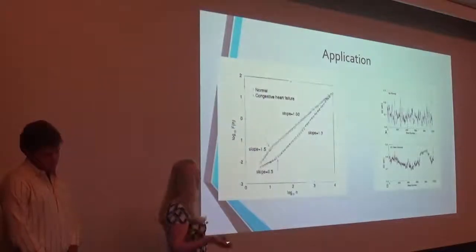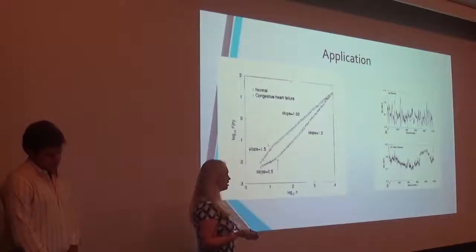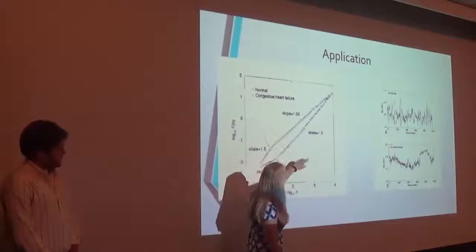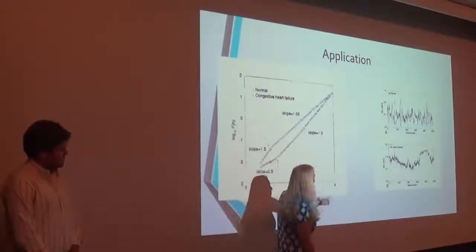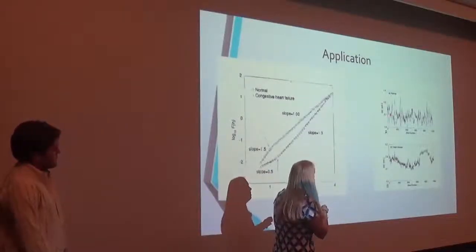So one application is Pang et al. did a study in chaos with congestive heart failure and normal hearts. And you can see they found that the slope for normal heart was 1, and the slope for congestive heart failure patient was 1.3.